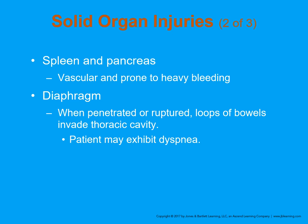The spleen and pancreas are also prone to heavy bleeding. It is possible to survive without these organs — there are medications that help people live without their pancreas; for example, they could take insulin. Remember that insulin is produced in the pancreas, so severe injury to the pancreas can result in an otherwise previously healthy person becoming insulin-dependent diabetic.